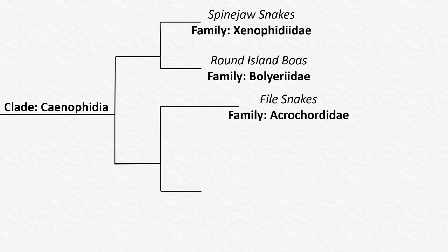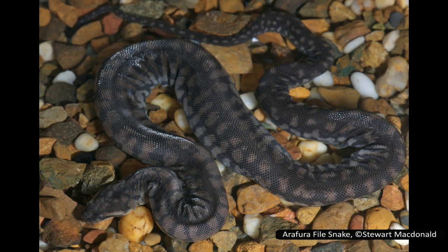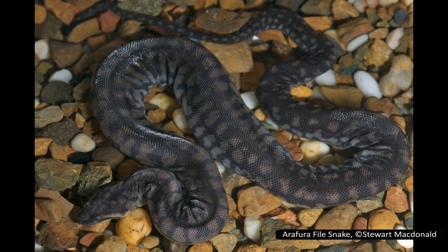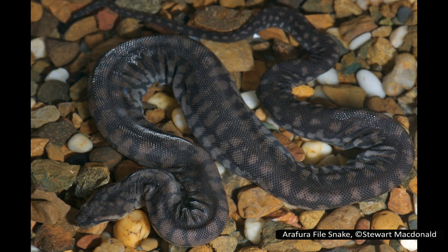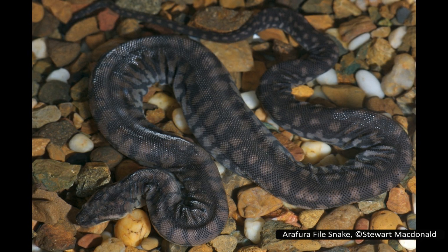The next family is Acrochordidae, which has various common names including the wart snakes, file snakes, elephant trunk snakes, and dog-face snakes. Their skin is loose and baggy, leading to several of their common names, and their scales are heavily keeled, giving them the name of file snakes. There is one genus with three species, found in India, Southeast Asia, and Australia. They are fully aquatic snakes, with eyes located higher on their head than seen in most snakes. They are ambush predators lurking on the bottom of rivers and streams, and their rough scales help them hold slippery fish.